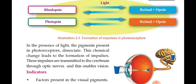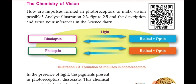Next we can move to the chemistry of vision. This is very short and simple. What are the chemical actions taking place at the time of vision? Rhodopsin will be changed into retinal and opsin, and then retinal and opsin join together and rhodopsin is formed again — in the presence of light. Similarly, photopsin is converted into retinal and opsin, and then converted back into photopsin. The name is the same but their chemical structure and content will be different, which is why they are shown in separate colors.